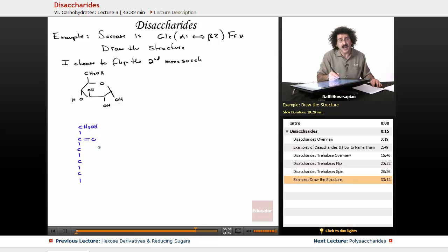So the number two carbon actually has the carbonyl. So here, OH. So I'm drawing out the linear form. One, two, three, four, five. Oops, I forgot. This is OH. And this is CH2OH. So this is the linear form.